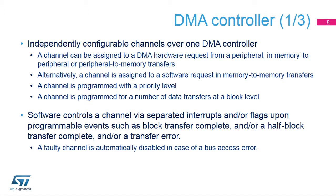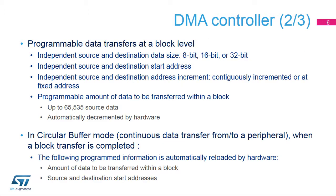A channel is programmed for a number of data transfers at a block level. The software can control a channel via separated interrupts and flags upon programmable events, such as a block transfer complete, a half-block transfer complete, and a transfer error. A faulty channel is automatically disabled in case of a bus access error. A channel is programmed with independent source and destination data size, independent source and destination start address, independent source and destination address increment, either contiguously incremented or at a fixed address, and a programmable amount of data to be transferred within a block, up to 65,535 source data, automatically decremented by hardware.